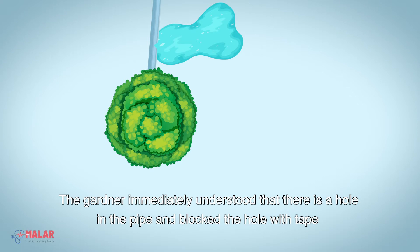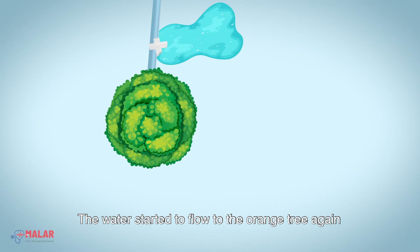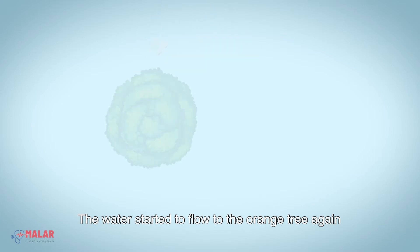The gardener immediately understood that there is a hole in the pipe and blocked the hole with tape. The water started to flow to the orange tree again.